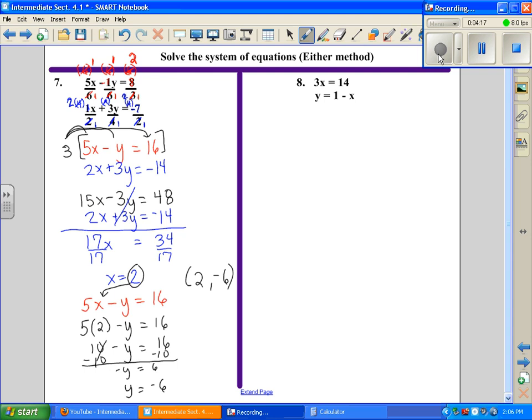Problem number 8, I'm going to use substitution. The first thing I'm going to do is solve the first equation for x, since there's only one variable in there. We already know our x value is 14 thirds. So all we need to do now is substitute that in. I have y equals 1 minus 14 thirds.